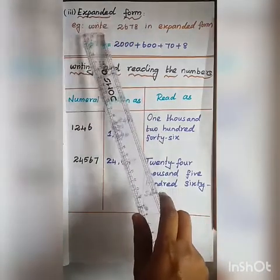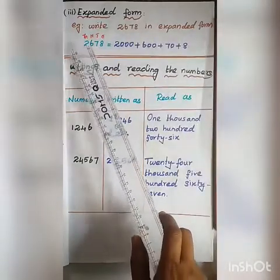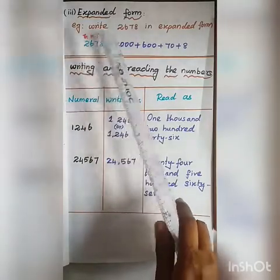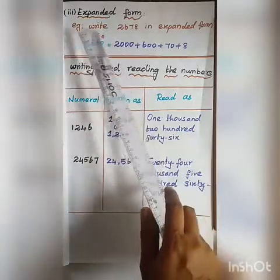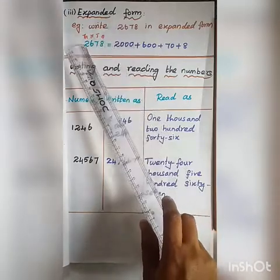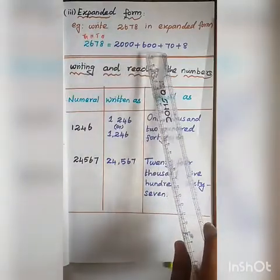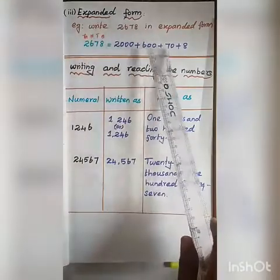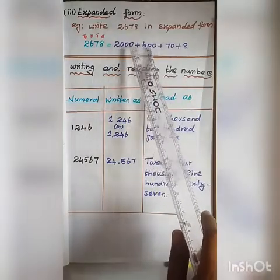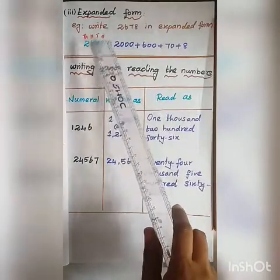Expanded form. Example: write 2,678 in expanded form. First, identify each digit's place using the Indian place value system. 2 is in the 1000's place: 2000. 6 is in the 100's place: 600. 7 is in the 10's place: 70. 8 is in the 1's place: 8. So the expanded form of 2,678 is 2000 + 600 + 70 + 8.